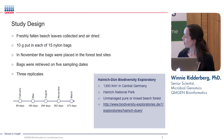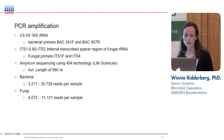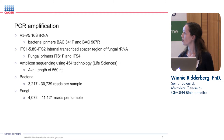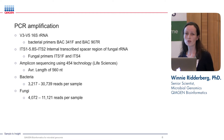The five sampling dates were: February after 89 days, May after 180 days, August after 284 days, November after 362 days, and March the following year after a total of 473 days. They amplified the V3 to V5 region of the 16S ribosomal RNA gene and the region spanning from ITS1 to ITS2 of the internal transcribed spacer region of the fungal ribosomal RNA gene. They used 454 technology to sequence the amplicons, which had an average length of 560 nucleotides.